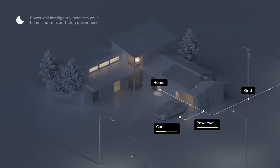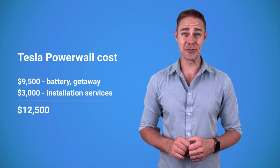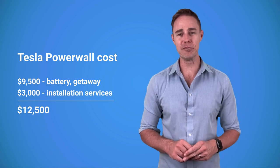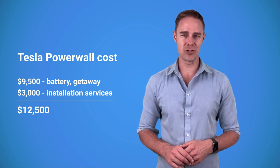So the Tesla Powerwall 2 is a battery system for residential use which powers your home during blackouts and helps you avoid utility peak rates. In January 2023, one Powerwall comes at $12,500, which includes the battery itself, the gateway, and the installation services that can cost around $3,000. People often get two or three Powerwalls.